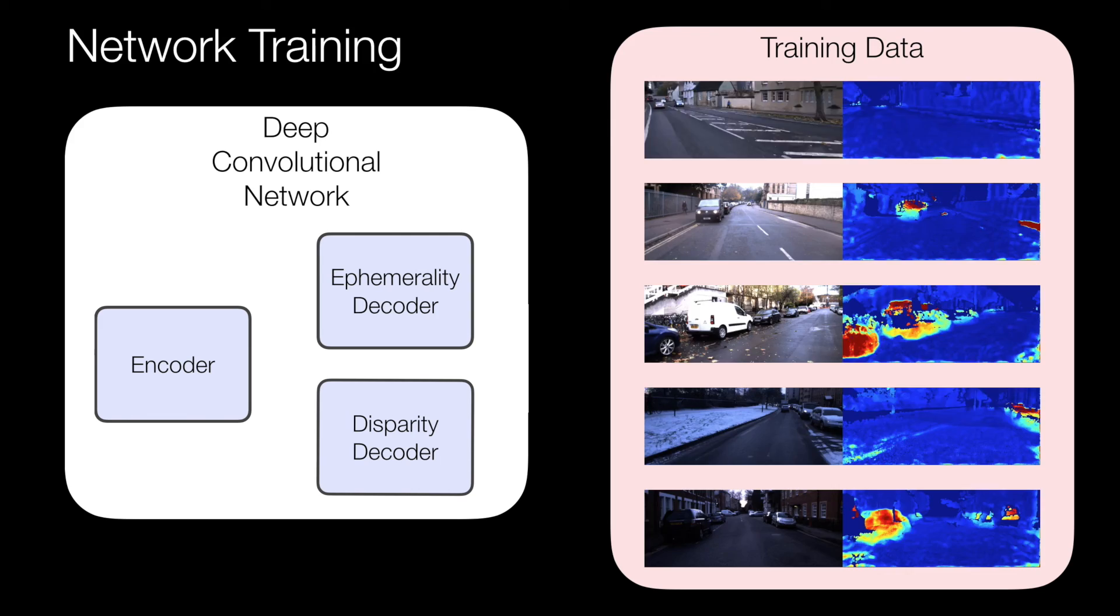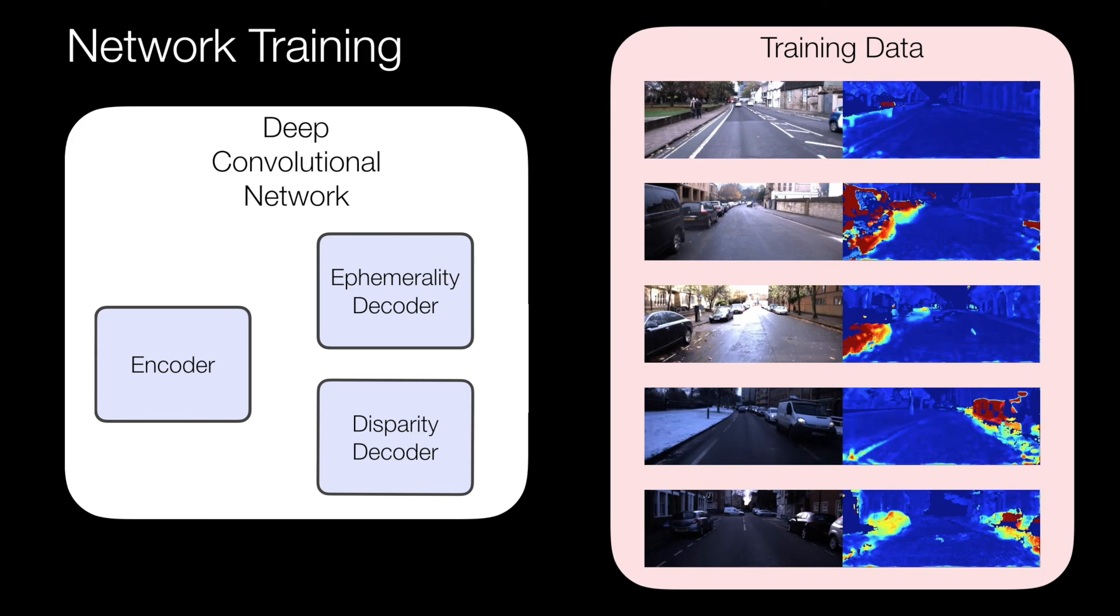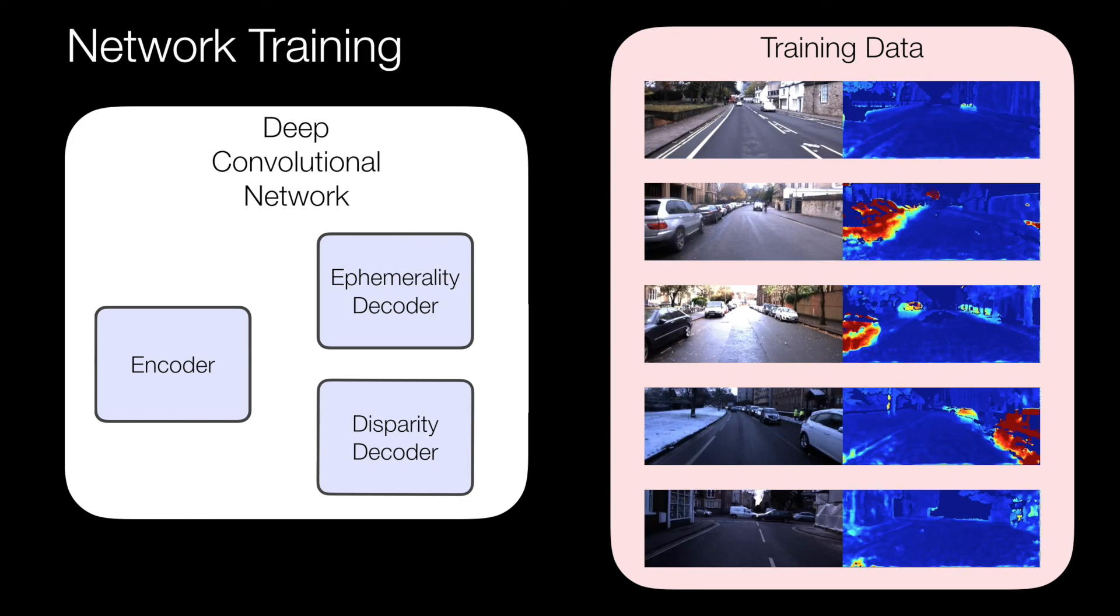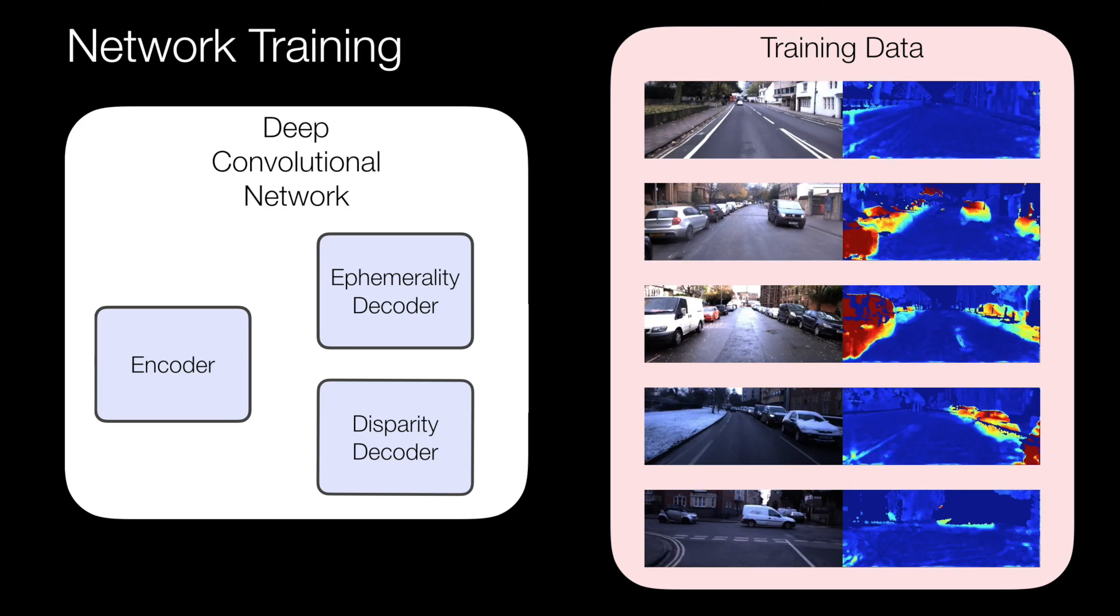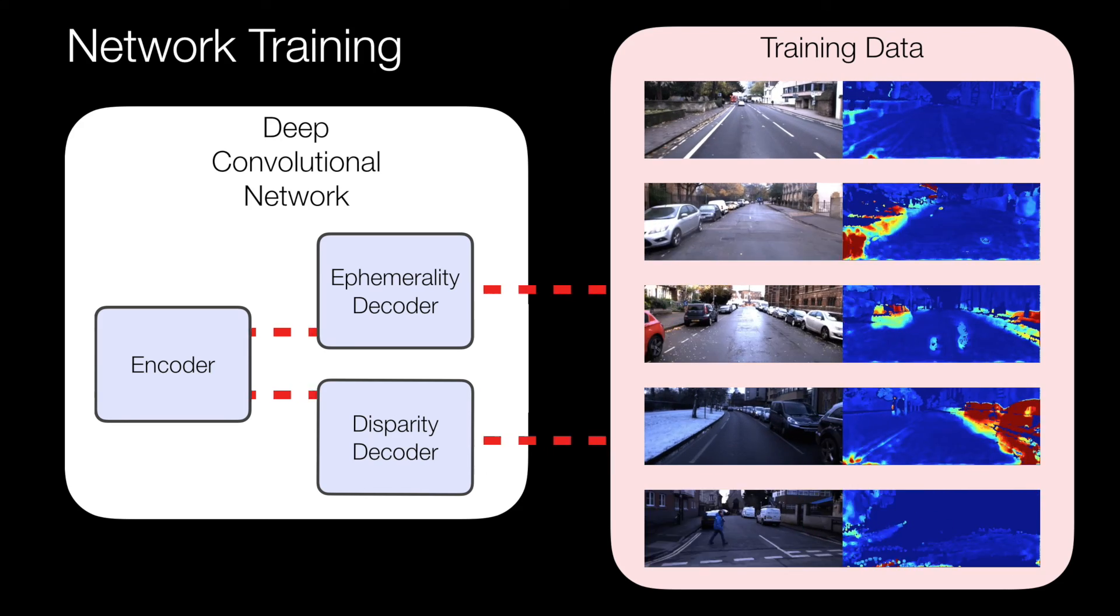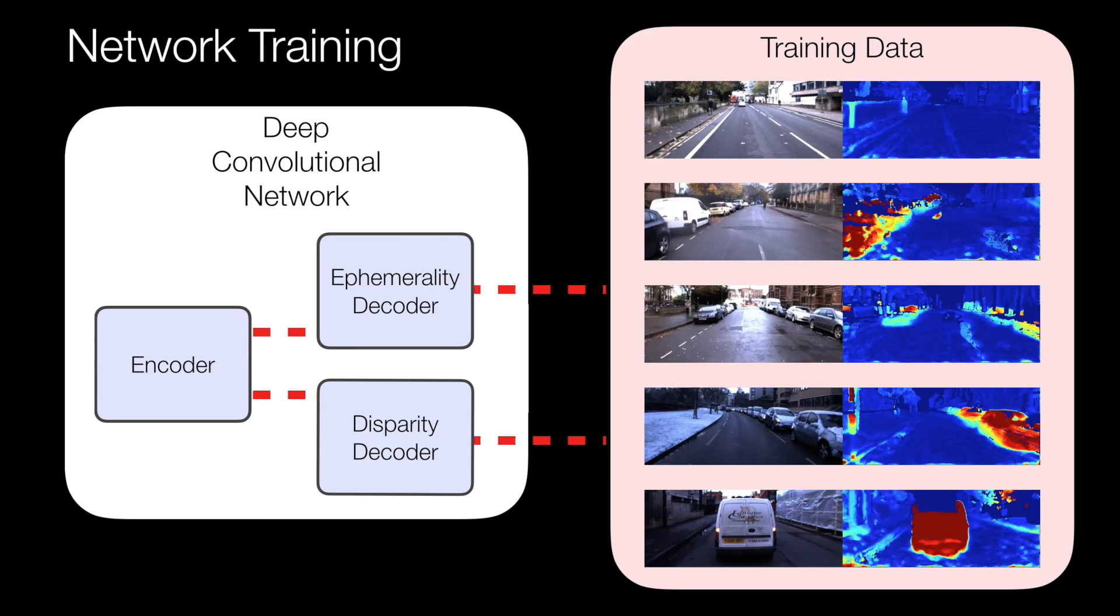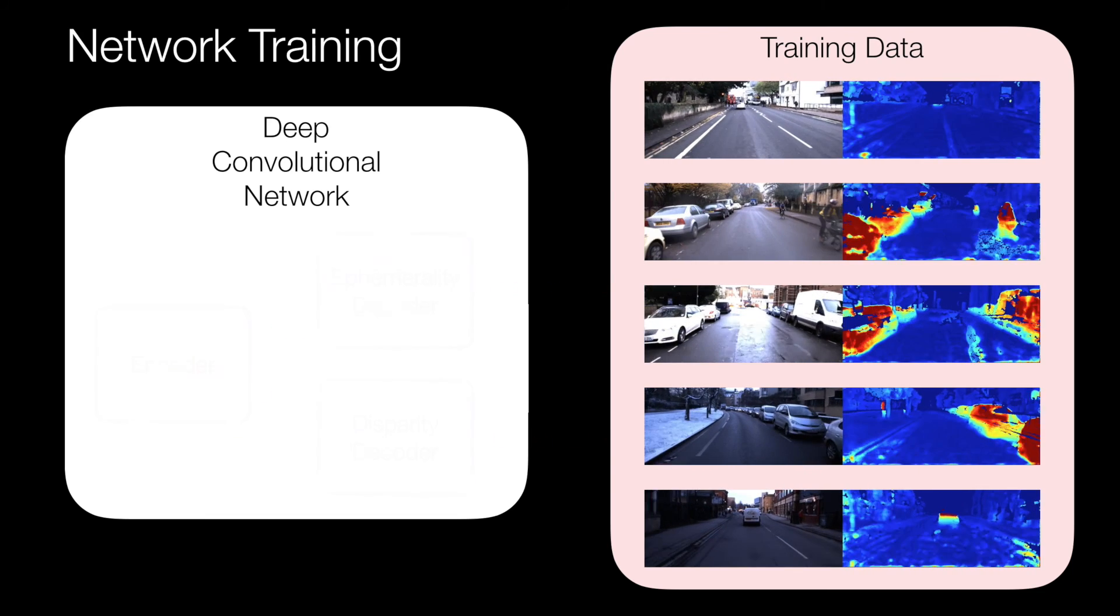Using this self-supervised approach we can automatically generate vast quantities of labels under different lighting, weather and traffic conditions. We use these labels to train a deep convolutional network to predict both the resulting pixel-wise ephemerality masks and disparity.